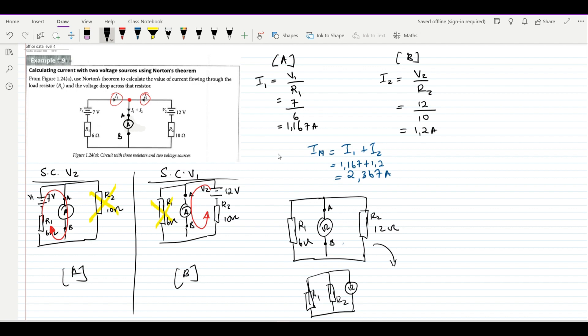Now since these are the only resistors in the circuit, it means those resistors will help us to calculate our Norton resistance, which will be given by R1 times R2 divided by R1 plus R2.